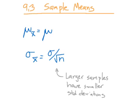In the first video on section 9.1 we talked about these two things. This is the mean of the sampling distribution of x-bar, or the mean of all possible samples. This is the standard deviation of x-bar — the standard deviation of all possible samples.